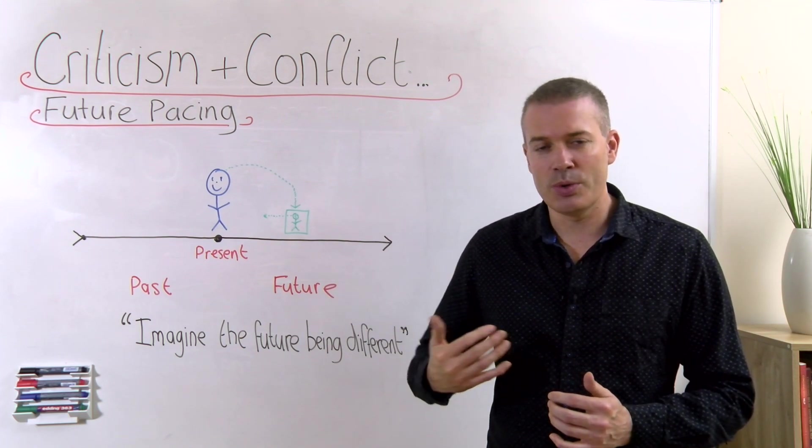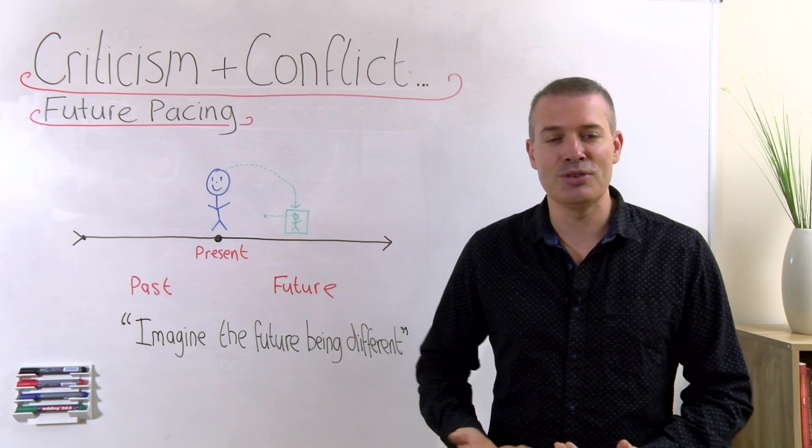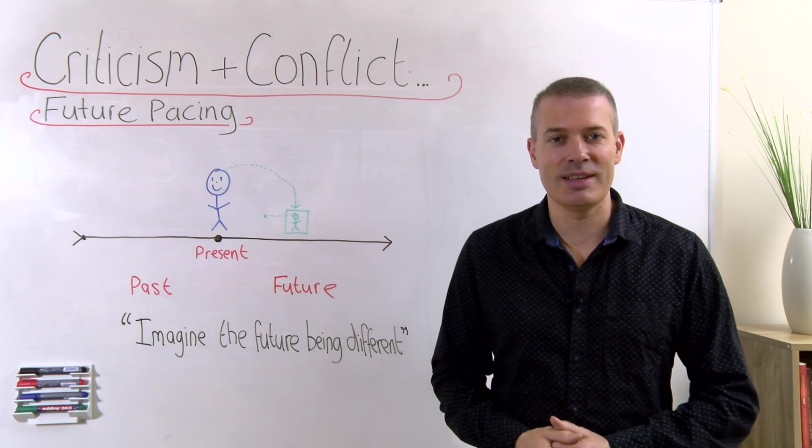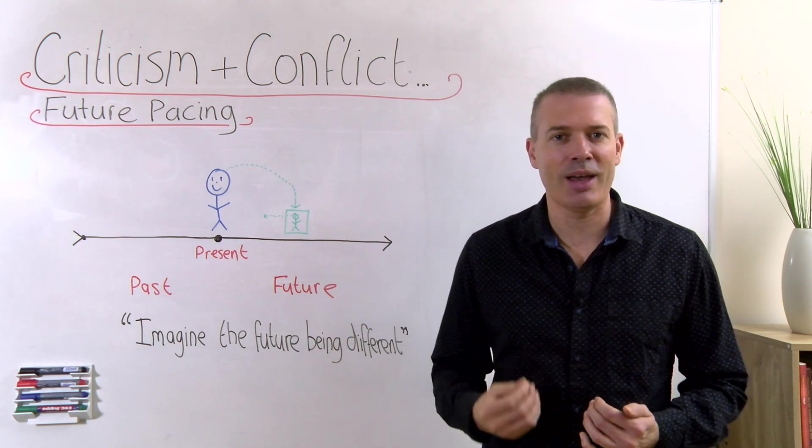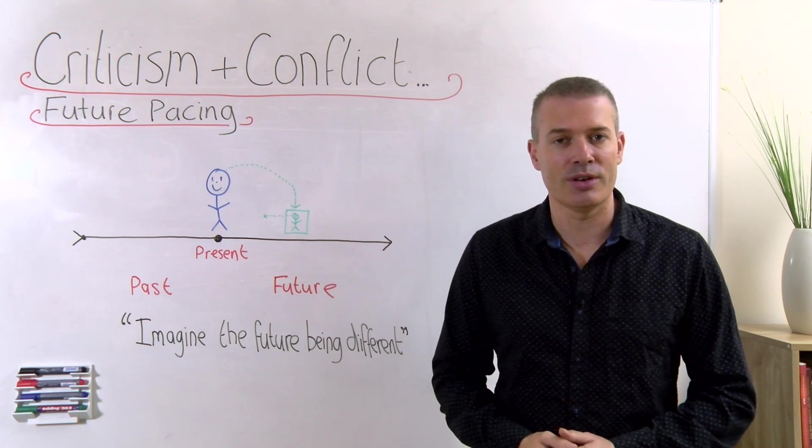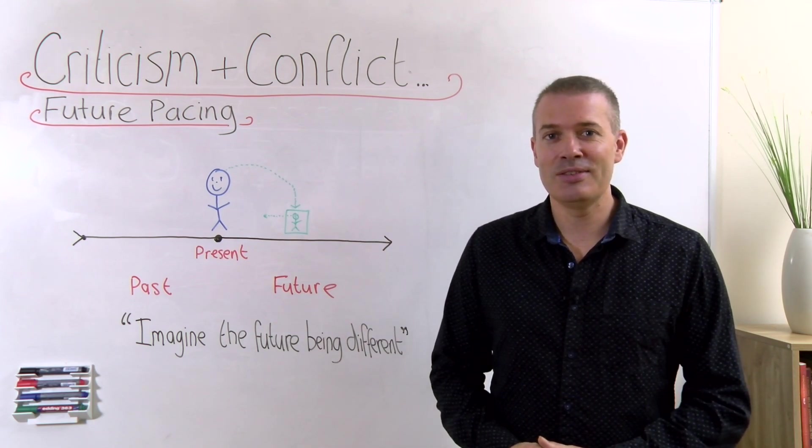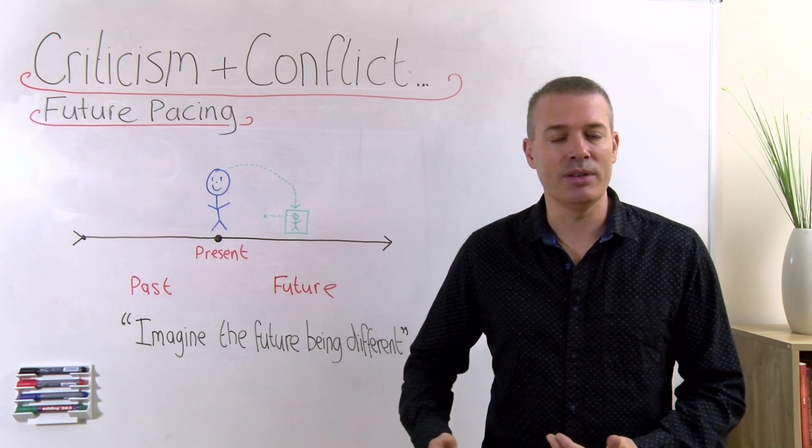So what you want to do is, once you go through the technique, once you've gained some new insights, some learnings, you've connected with potentially the positive intention of the person who's criticizing you, and you've come up with a bit of a description in terms of how you would like to behave differently in the future, you then want to sit back, close your eyes, and then just simply project yourself inside your mind to some point in the future.